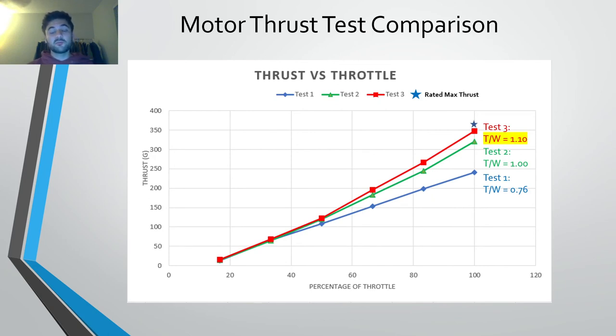Comparing these three tests, we can see test one got a thrust to weight of 0.76, test two got a thrust to weight of 1.00, and test three got a thrust to weight of 1.1. You can compare to the manufacturer's max thrust at the blue star there, and that is at 360 grams, and test three was getting around 348 grams, so the numbers were close enough, and we decided to move forward.